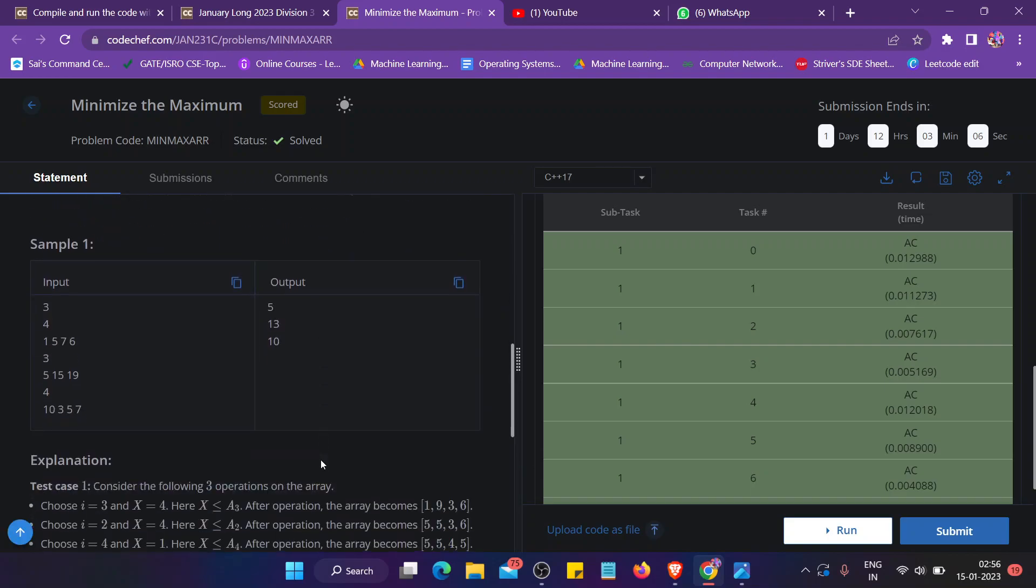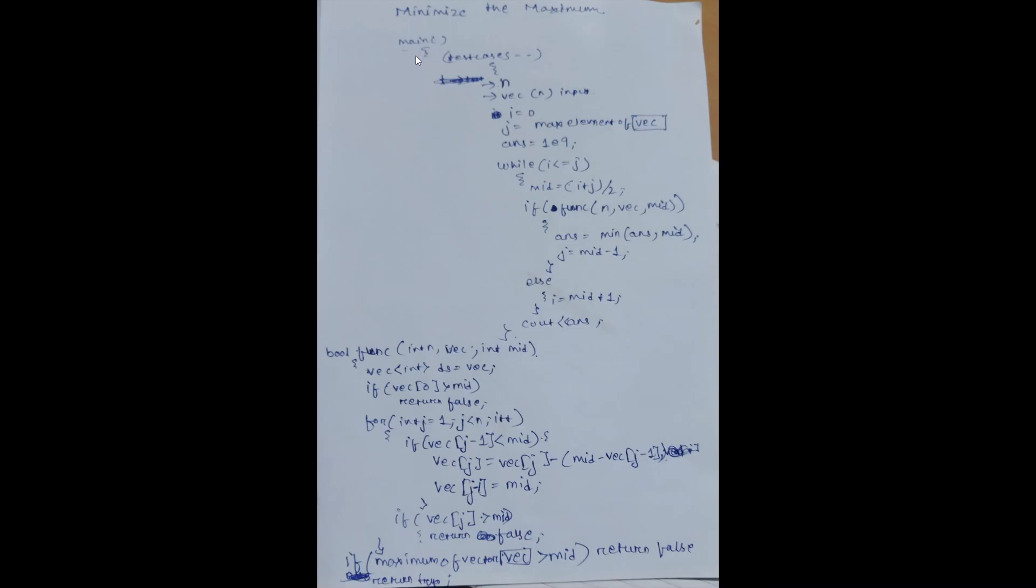The solution is like this: you have to input the vector first. Then, it is a binary search type question. What we have to do is initialize the i-th value to zero and a variable j to the maximum element of the vector that you have input.